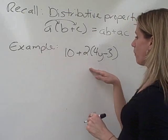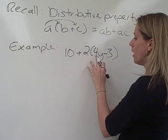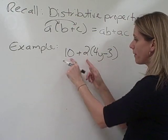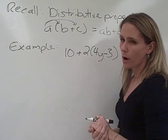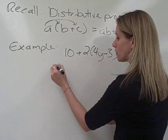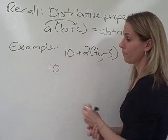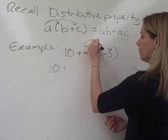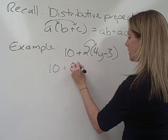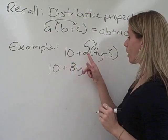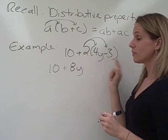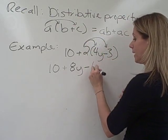So let's look here at this example. We've got 10 plus 2 times 4y minus 3. Now, it might be tempting to add the 10 and the 2. But your order of operations says you have to do multiplication before you do addition. So that 10 is going to hang out for a minute. Then we're going to take the 2, multiply it by the 4y, using our distributive property, to give us 8y. And we're also going to take 2 and multiply it by a minus 3. And a positive times a negative is a negative.